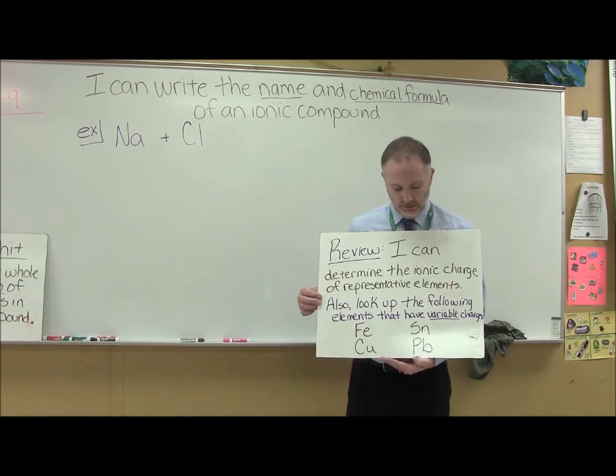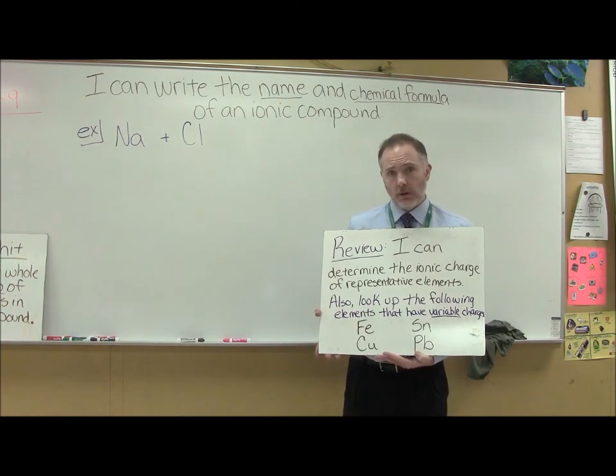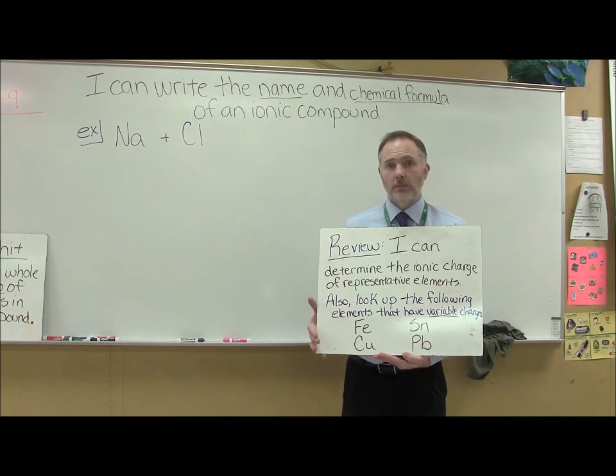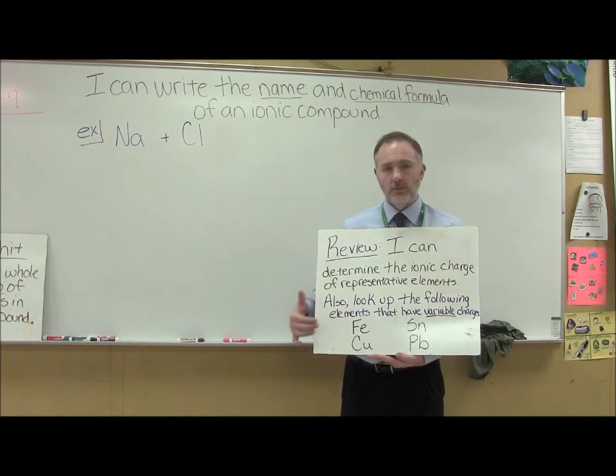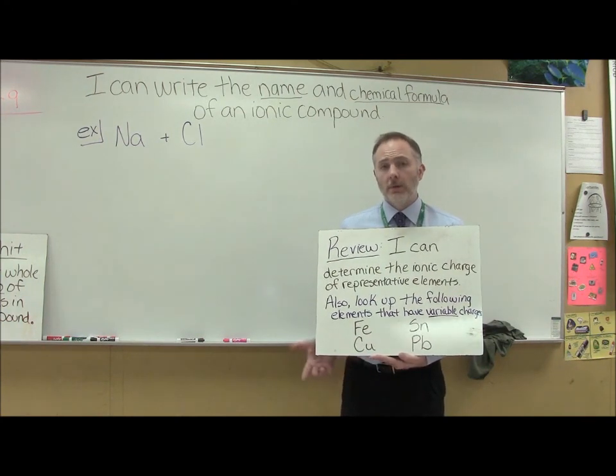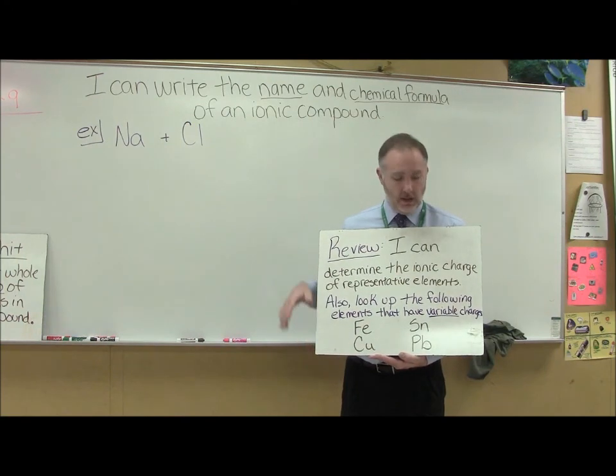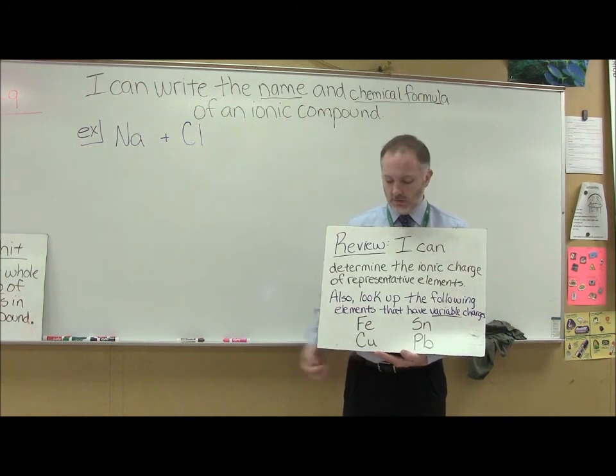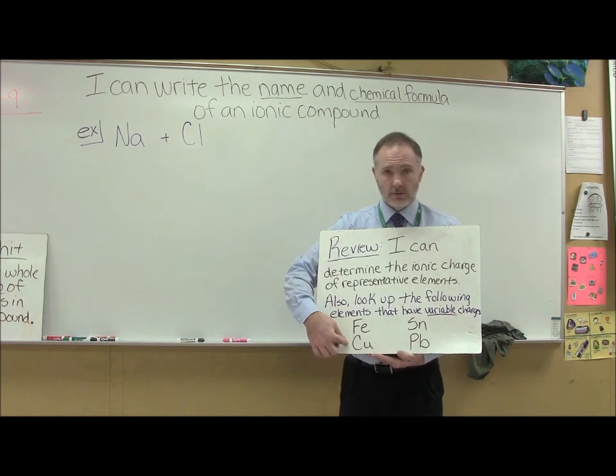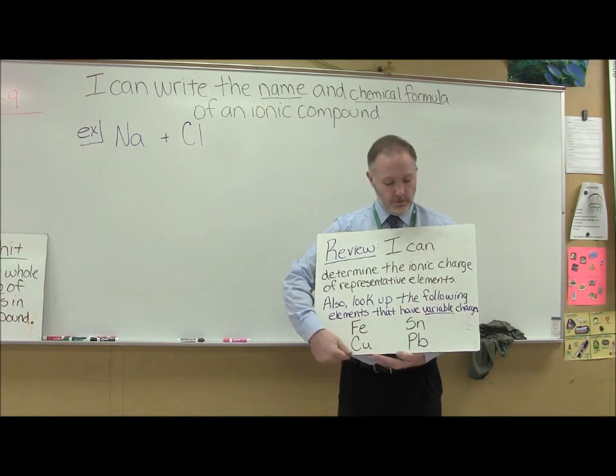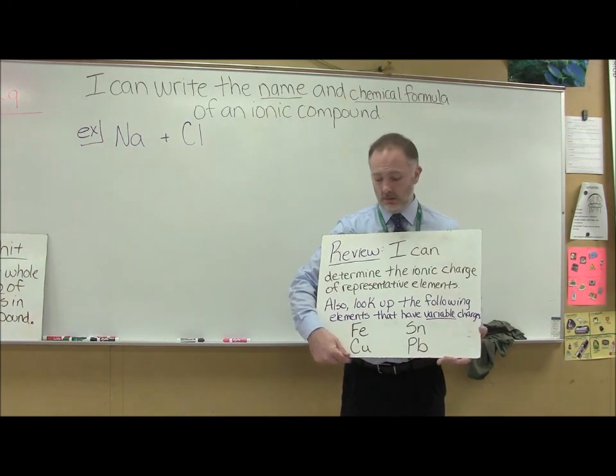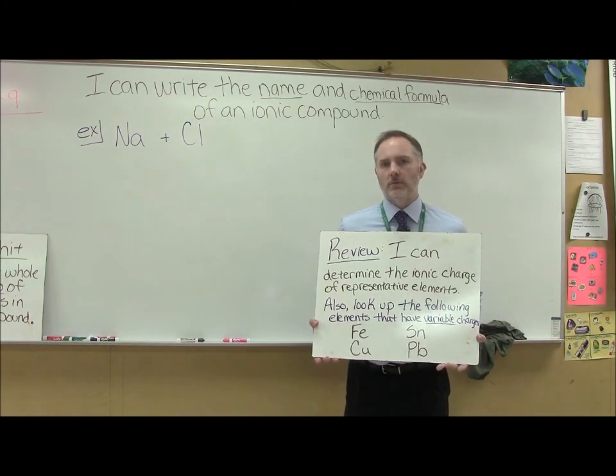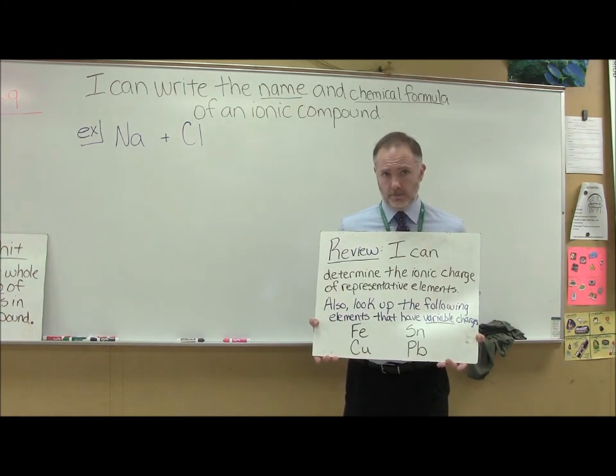And also one more thing, way back when we did our element quizzes, we learned about some elements, some metals in particular, the transition metals that form variable ionic charges, meaning it varies. It can have more than one charge. So I need you to refresh yourself. What charges does iron form? What two charges does copper form? Tin and lead. Each one of these has two different charges that it can form. That's why it's called a variable charge.